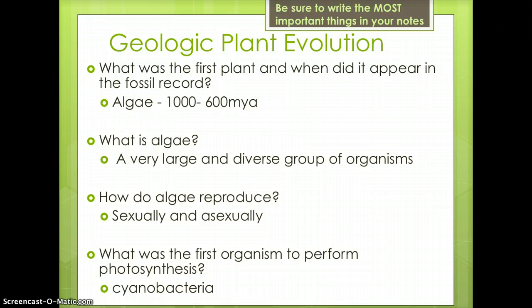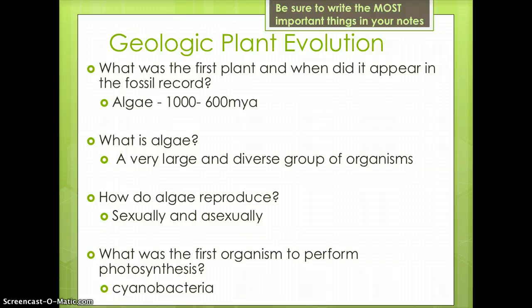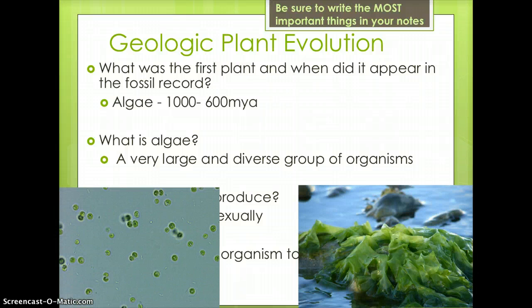The first plant to appear in the fossil record was algae. It appeared 1,000 to 600 million years ago. Algae is a very large and diverse group of organisms. Algae range from small unicellular organisms, such as chlorella, to large multicellular organisms like seaweeds. The image on the left is multiple chlorella organisms. The image on the right is seaweed.